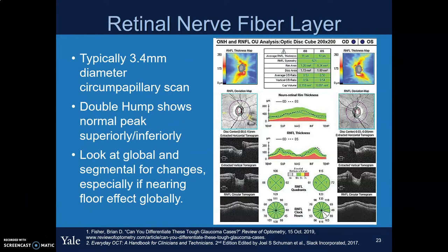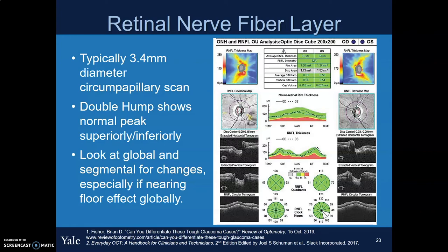The RNFL analysis scan typically looks at around a 3.4 millimeter diameter around the optic nerve, comparing it to the normative database. Looking at RNFL thickness, we can see two humps at the superior and inferior aspects representing normal RNFL thicknesses. We can look at the average RNFL or at particular quadrants or even particular clock hours. Looking at quadrants and clock hours can be particularly helpful as we approach the floor effect for RNFL analysis, where different segments may not have quite hit the floor effect yet.